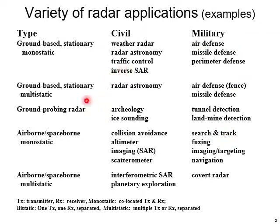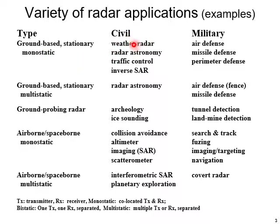Now we can try to understand the variety of radar applications. If we have a ground-based stationary monostatic radar — monostatic means the transmitter and receiver are in the same geographic location — we can divide applications into civil and military categories. Civil applications include weather radar, radar astronomy, traffic control, synthetic aperture radar, and inverse synthetic aperture radar. In the military domain, we have air defense, missile defense, and perimeter defense.